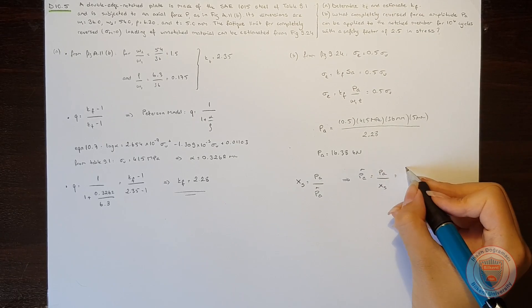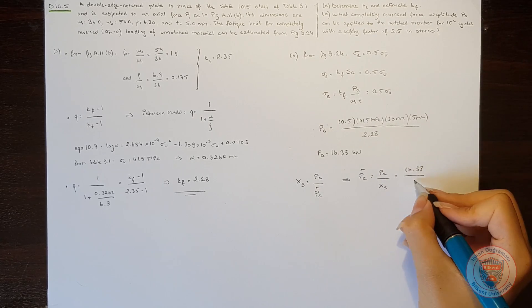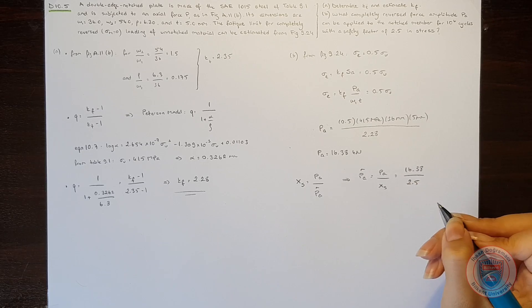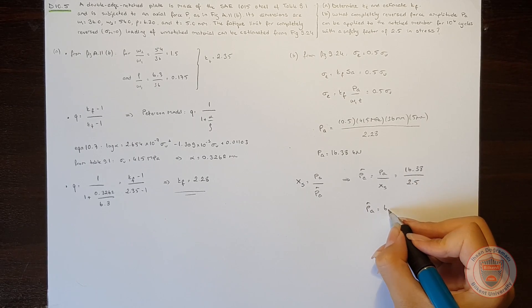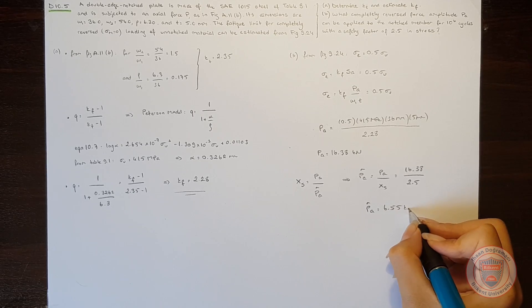We know that Pa is 16.38 kN and the safety factor is 2.5. So that Pa bar will be equal to 6.55 kN.